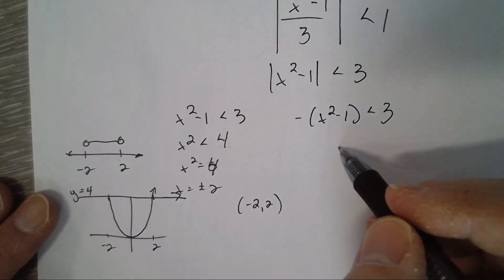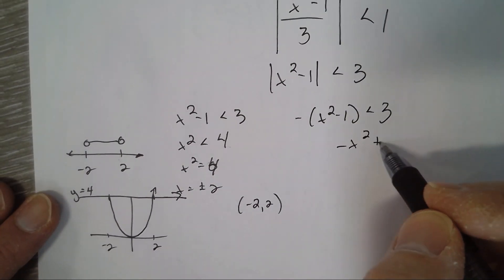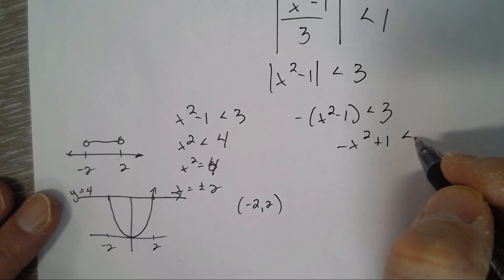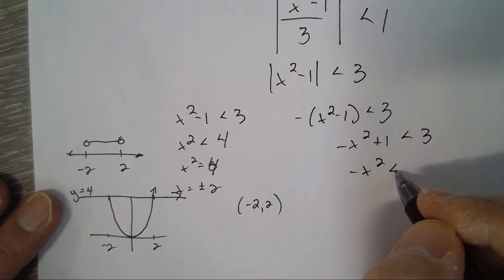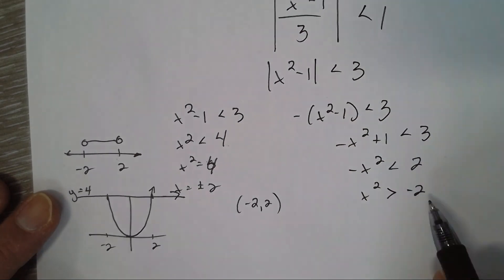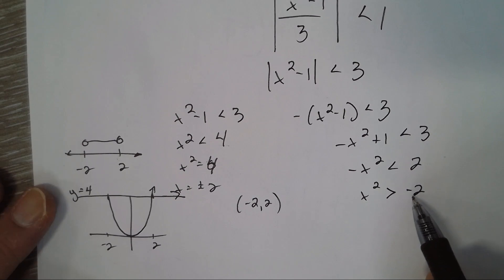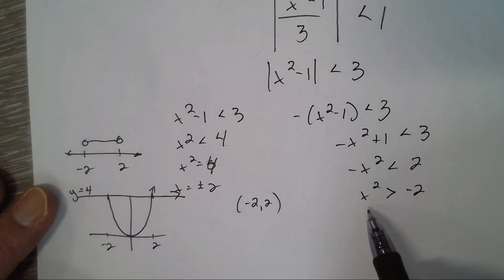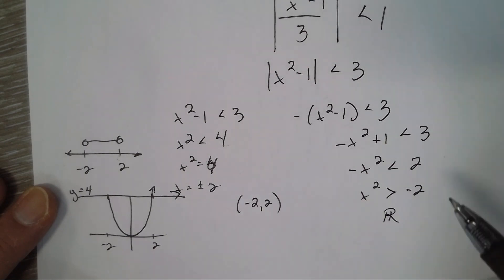This other inequality: the opposite of x squared plus one. Opposite x squared less than two, x squared greater than negative two. Where is x squared greater than negative two? Well, any number will produce a number greater than negative two, so this inequality is all real numbers. Anything you put in is going to make this one true.